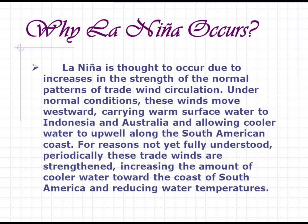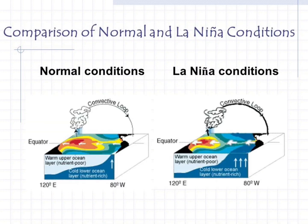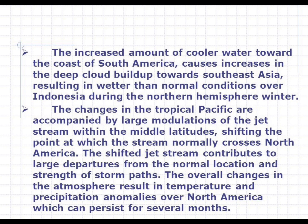Why La Niña occurs: La Niña is thought to occur due to increases in the strength of normal patterns of trade wind circulation. Under normal conditions, these winds move westward carrying warm surface water to Indonesia and Australia and allowing cooler water to upwell along the South American coast. Periodically, for reasons not yet fully understood, these trade winds are strengthened, increasing the amount of cooler water toward the coast of South America and reducing water temperatures.